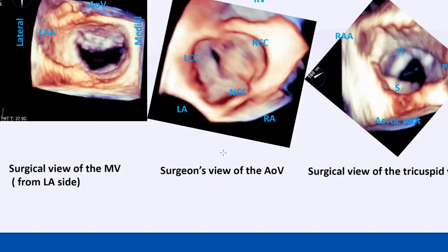This is a surgical view of all the valves. We have the mitral valve surgical view for a long time, but for other valves we have to develop it. In surgical view of the mitral valve, the left atrial appendage is always on your left side, with the surgeon standing here. For the aortic valve surgical view, we can identify the non-coronary cusp, left coronary cusp, and right coronary cusp, with the surgeon always standing beside the non-coronary cusp.